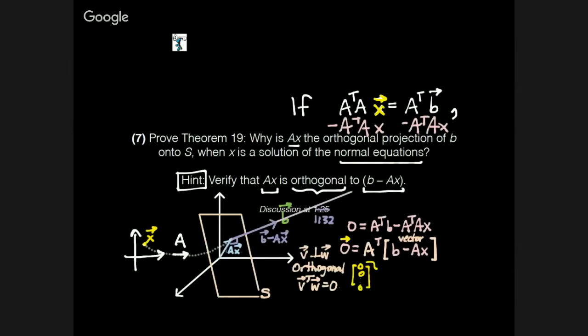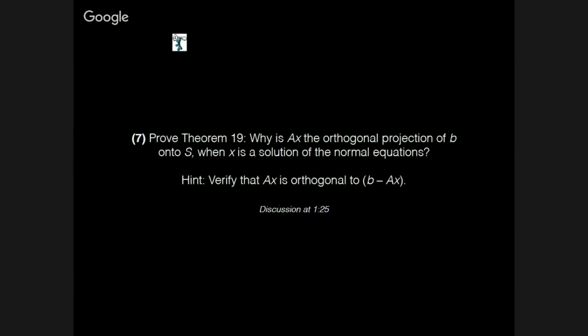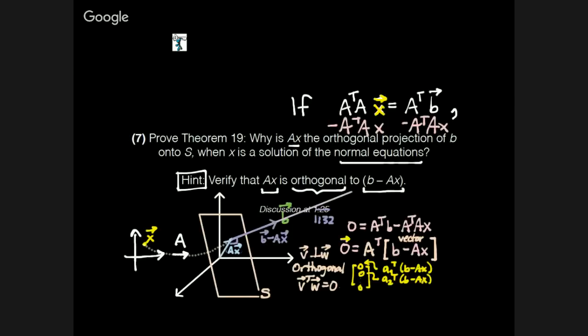This first zero is going to be the dot product, or it's going to be the transpose rather, of the first column of A, let's call it A1 transpose, with B minus Ax. And same thing with the second entry, this is going to be the second column transpose B minus Ax, and so on and so forth, down to the last column, An transpose B minus Ax.